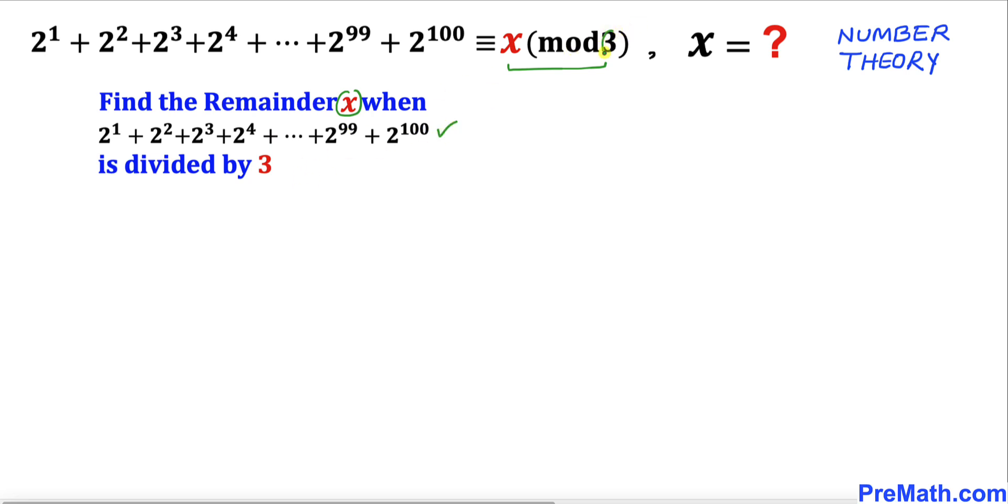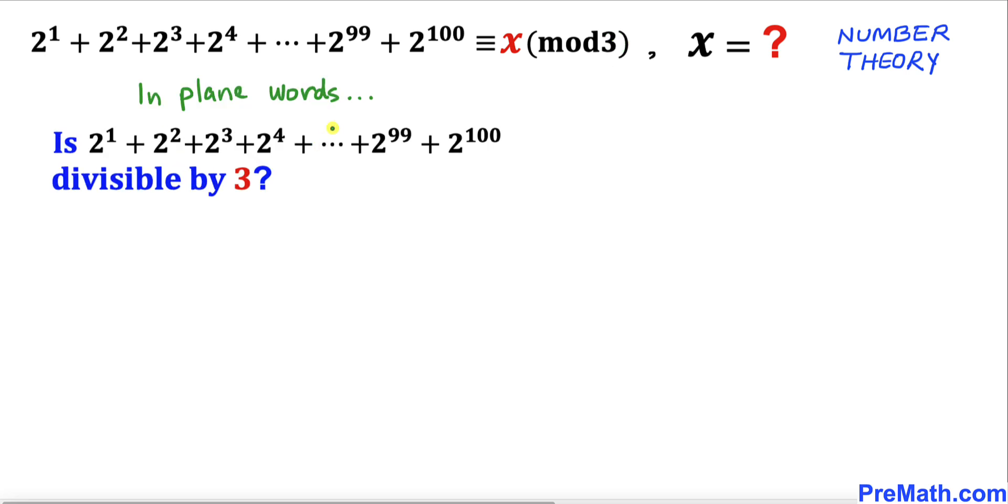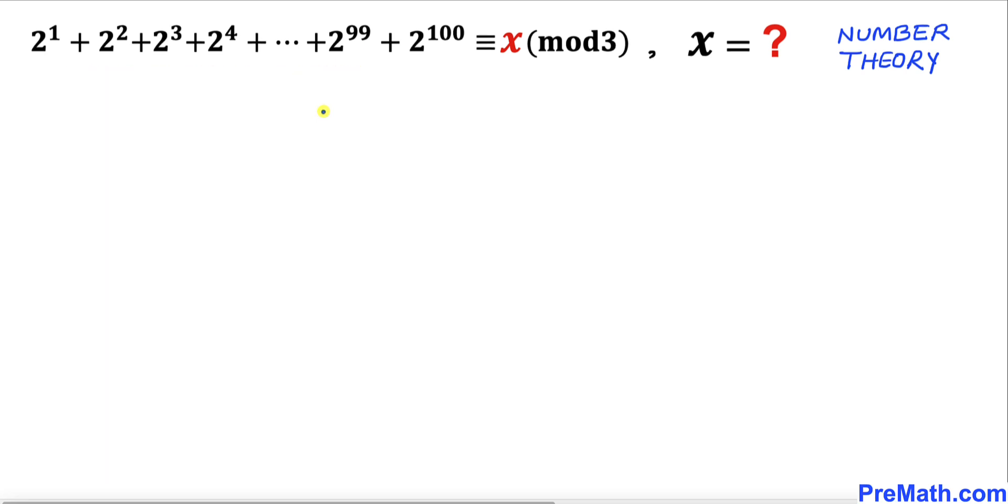In plain words, this means this huge number string is divisible by 3. Here's our first step: let's focus on the left-hand side, this huge number string.